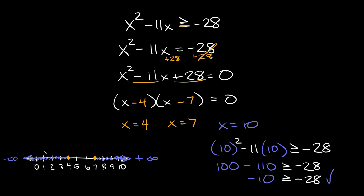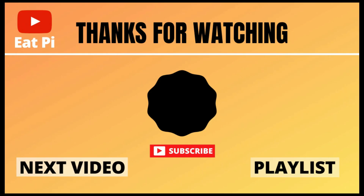Writing the answer as a compound inequality: x is less than or equal to 4, because those solutions include 4 and all smaller numbers, or x is greater than or equal to 7. We write 'or' because there's a gap in the middle. If you found the video helpful, leave a thumbs up below, and if you have any questions or want to see more examples, let me know in the comments.